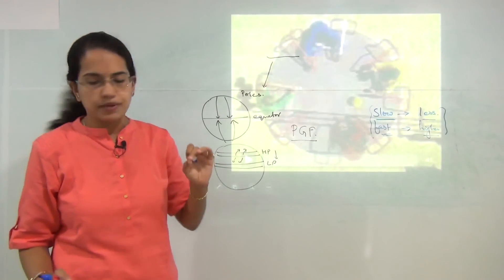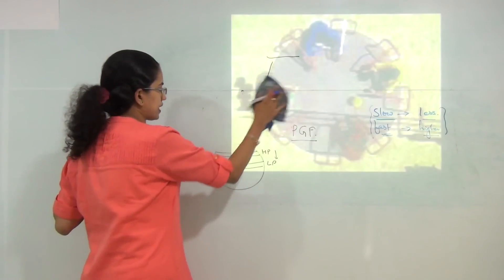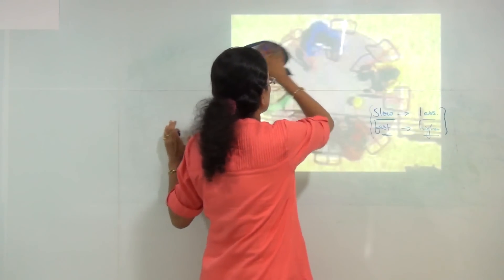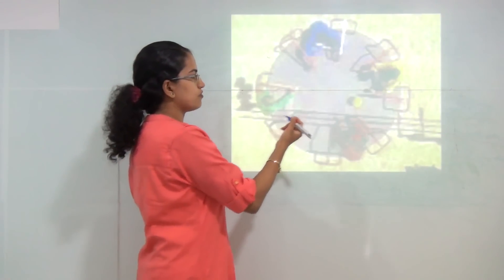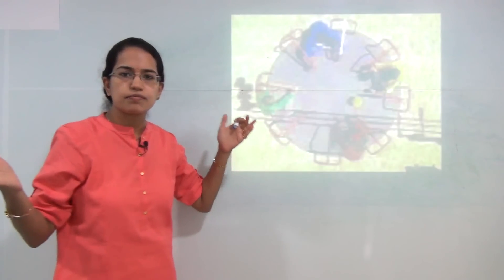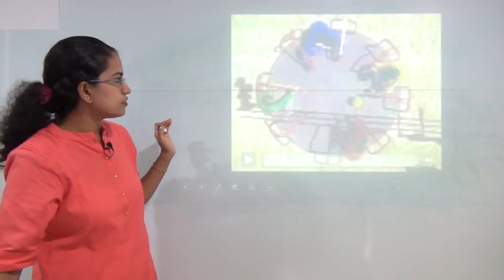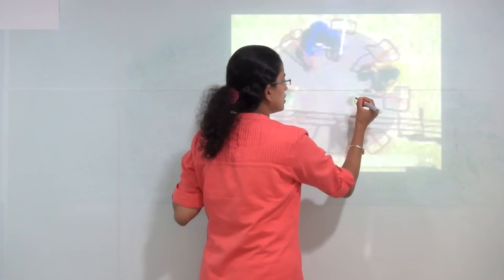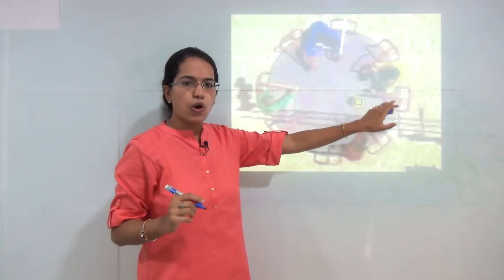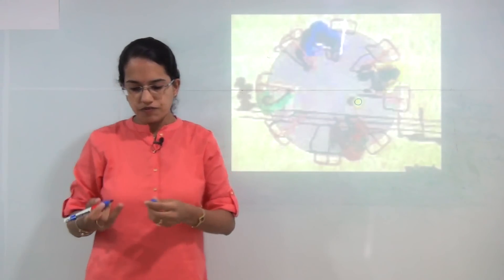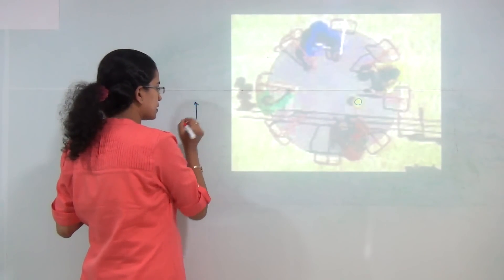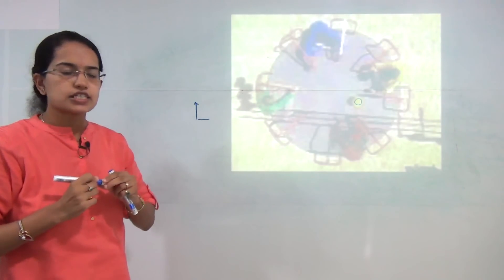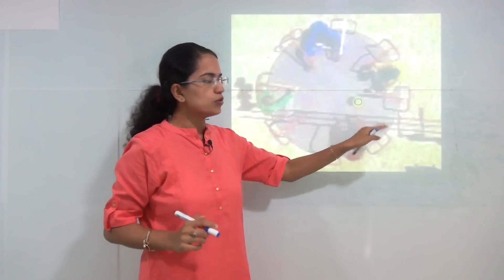To understand this we need to understand the Coriolis effect — the effect on the mass of a moving body in a rotating system. Consider a merry-go-round: you have a mass, a ball, rotating on a merry-go-round. The force acts perpendicular to both the direction of motion and the axis of rotation.